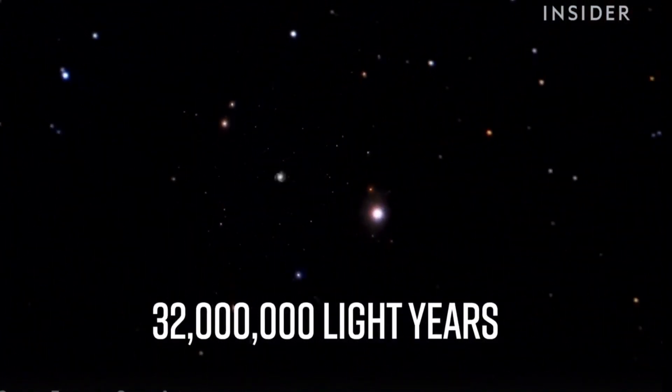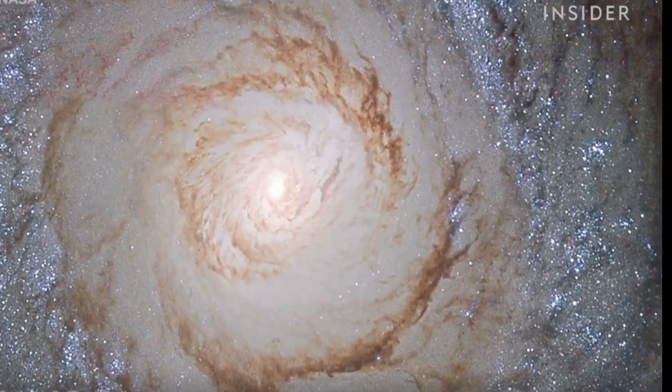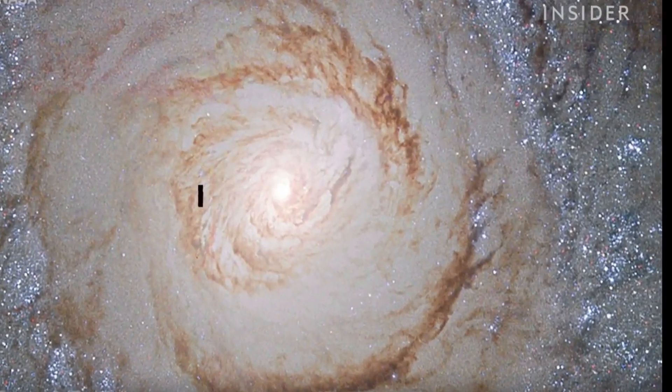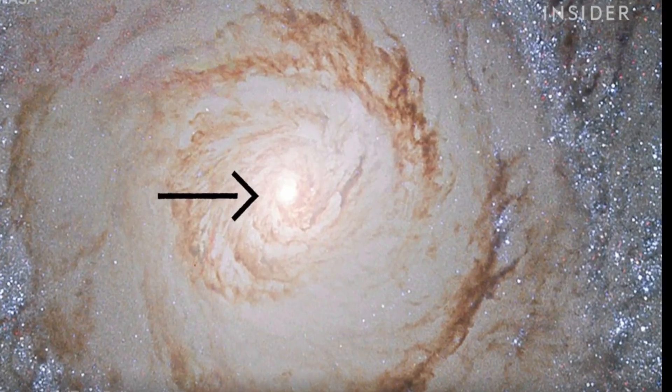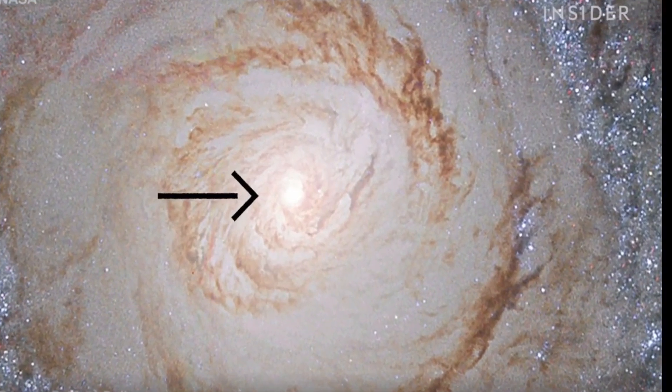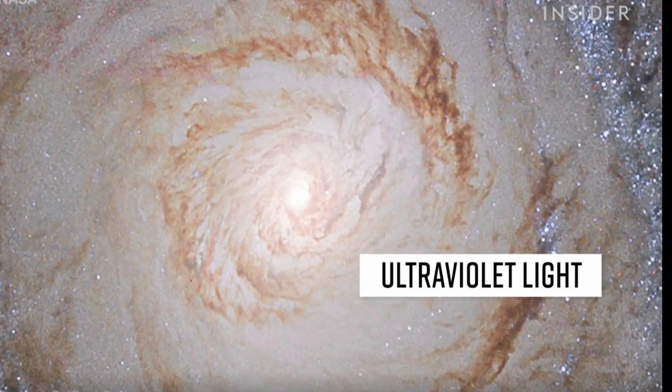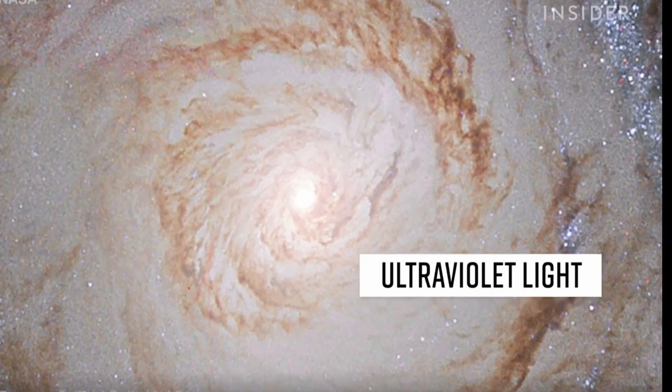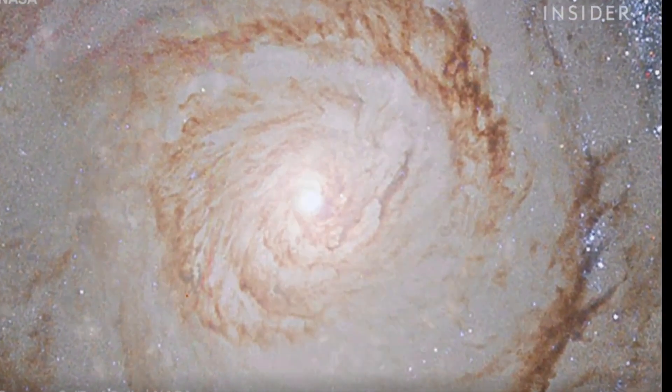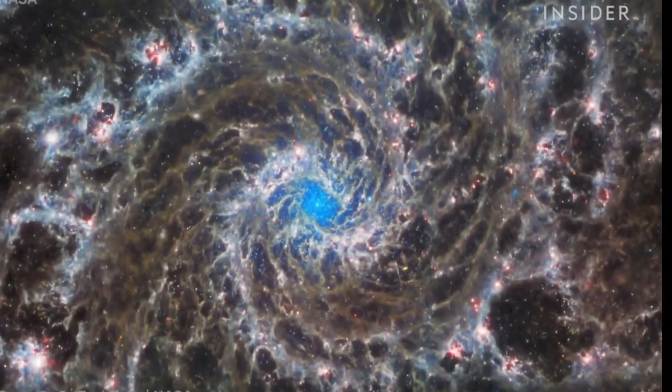NASA's Hubble telescope took this photo. Here, it's hard to see anything but clouds of gas at the galaxy's core. That's because Hubble picks up on ultraviolet light, which these gases emit. But Webb doesn't, so it can see what's happening underneath the gases.